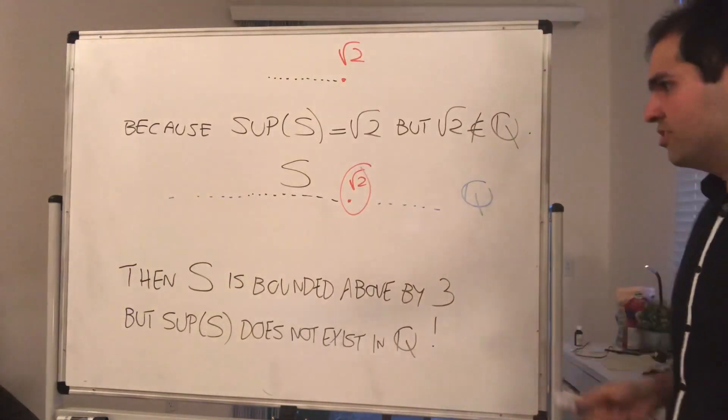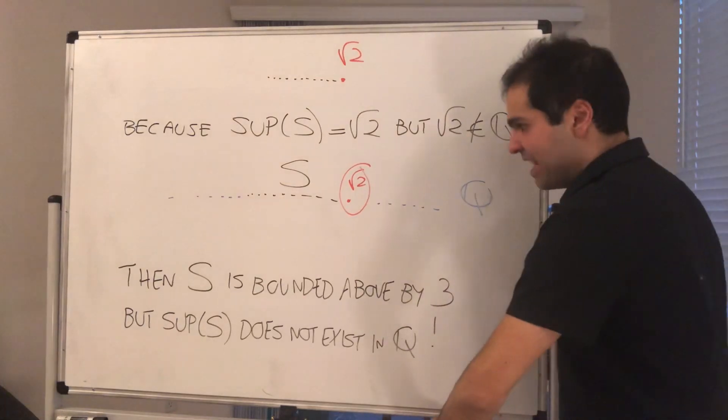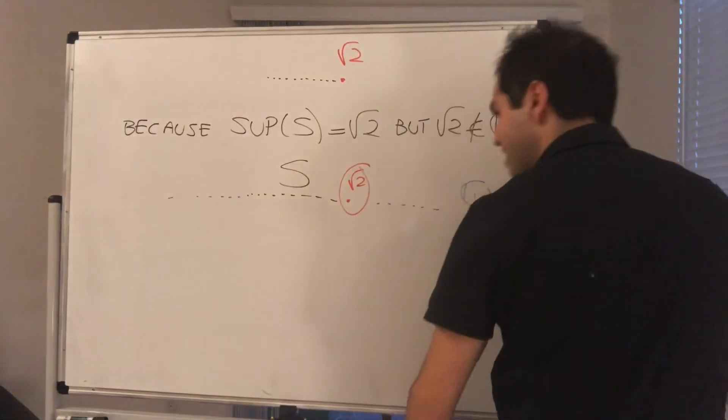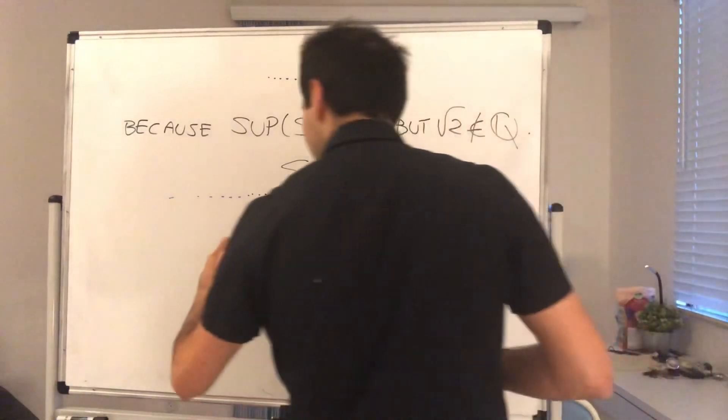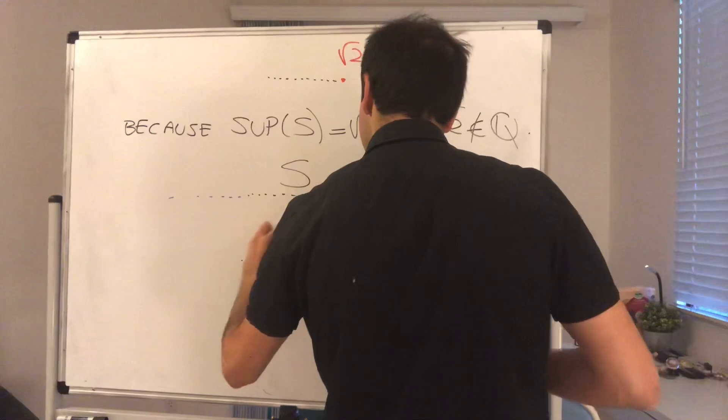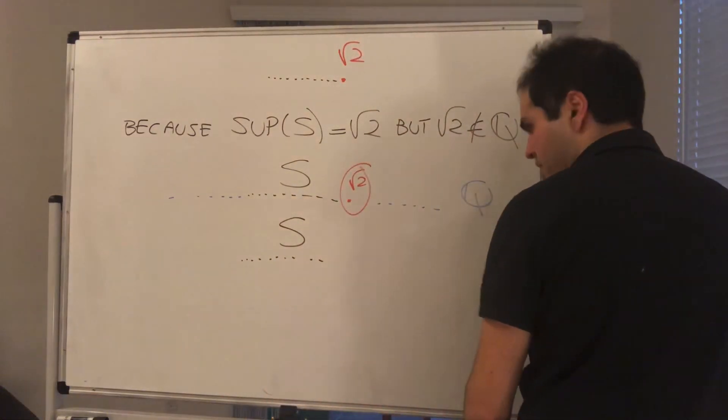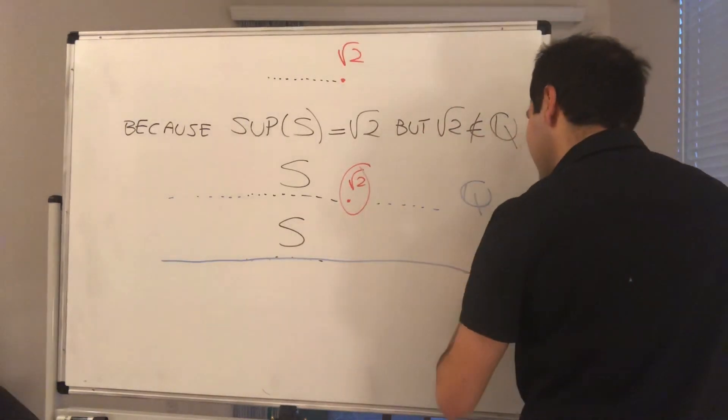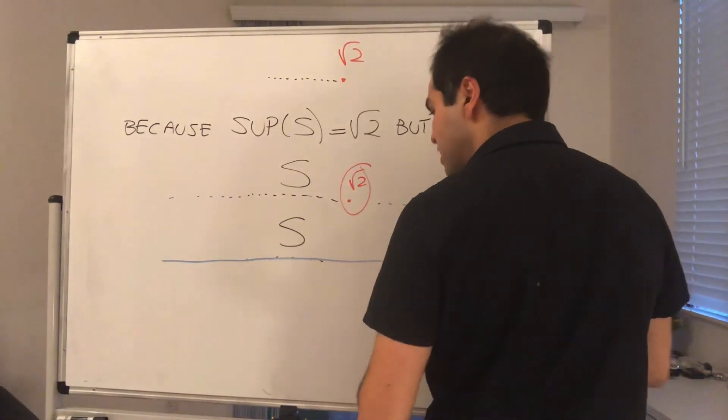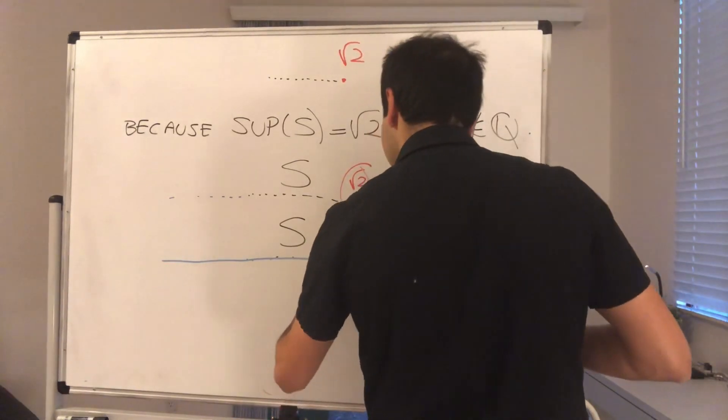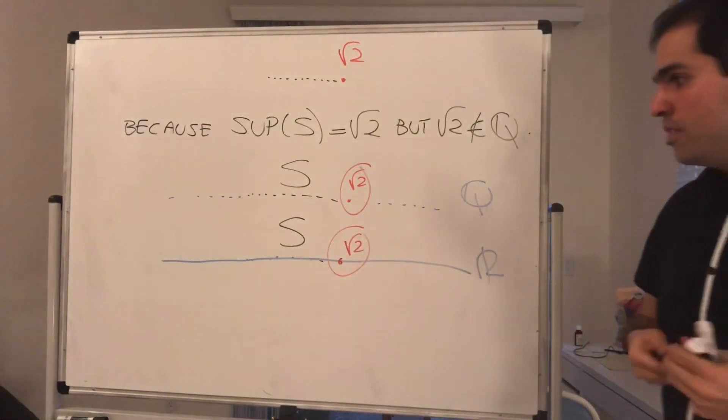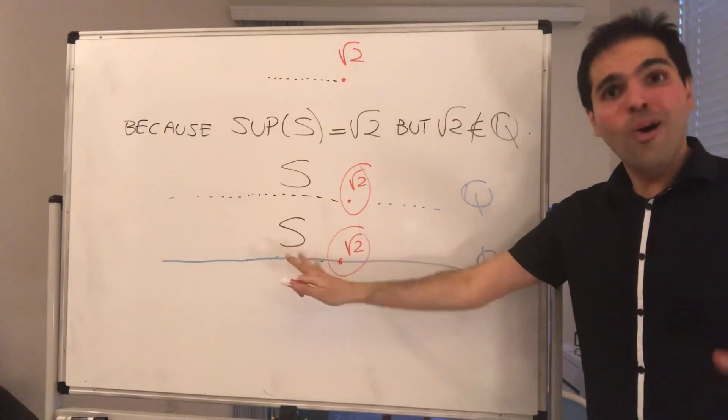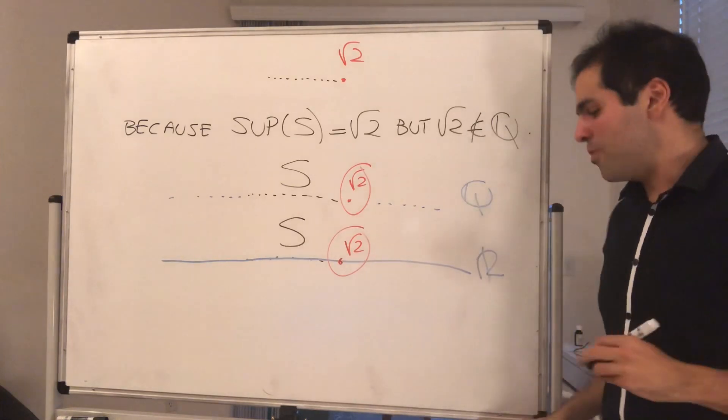But this is not true for the real numbers, because the real numbers, they're complete, they don't have any holes. So if you redo the situation but in the real numbers, then R is a complete entity, and in fact, the gap square root of 2 that was missing in Q is actually in the real numbers. So, here, S is a set that's bounded above in R, and that S does have a least upper bound in R.